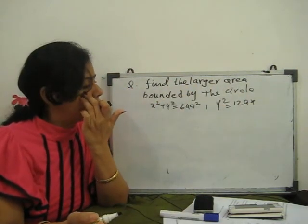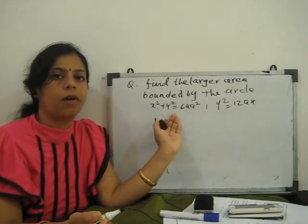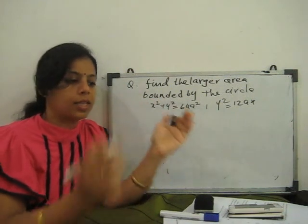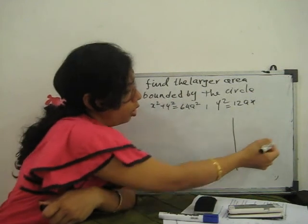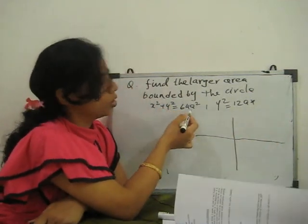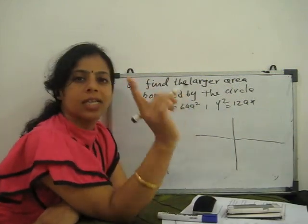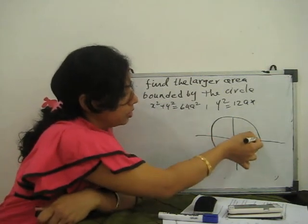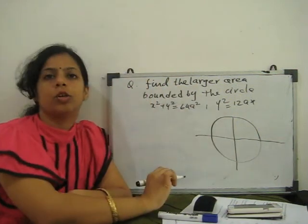Similarly, you can solve this equation for x and y. If you have to find out the common point of x and y, then we decide the lower and upper limit also, and you can plot it. So which one is the larger area? For this circle, x² + y² = 64a², the center is at (0, 0) and radius is 8a.